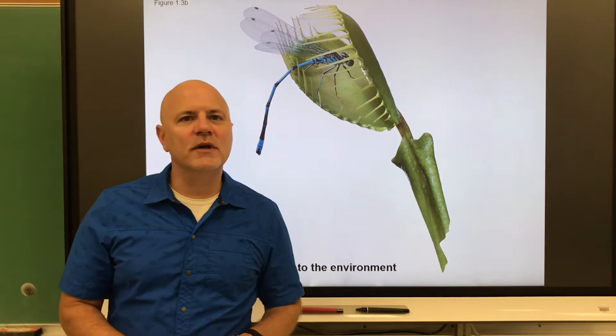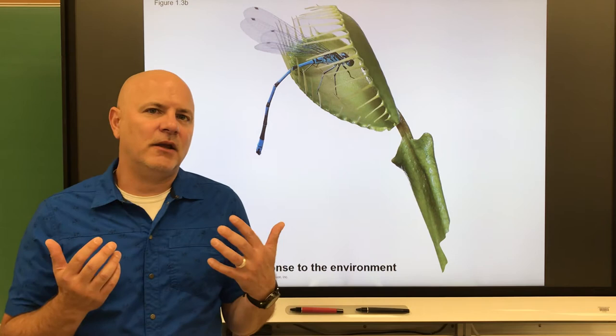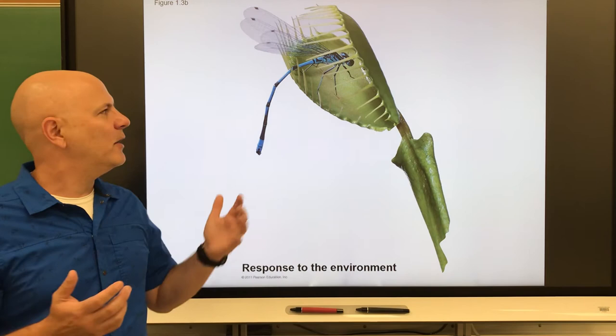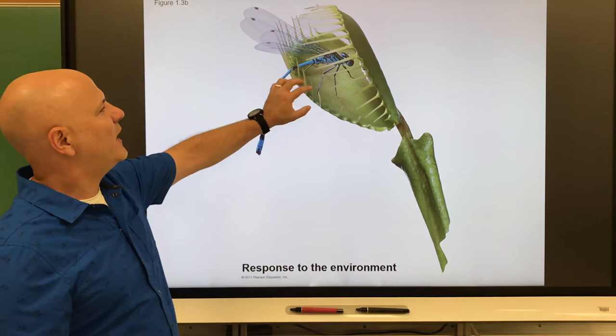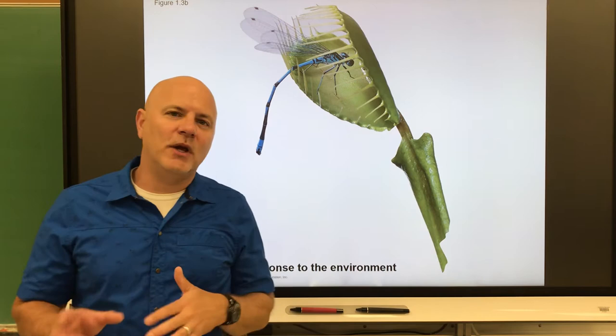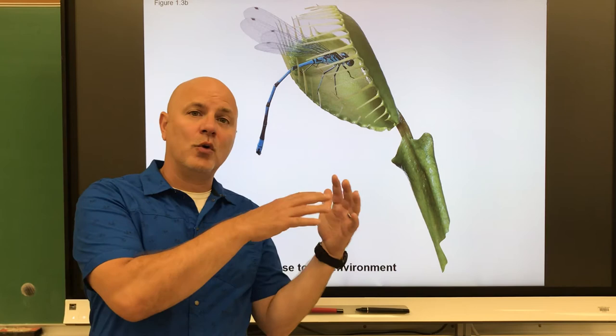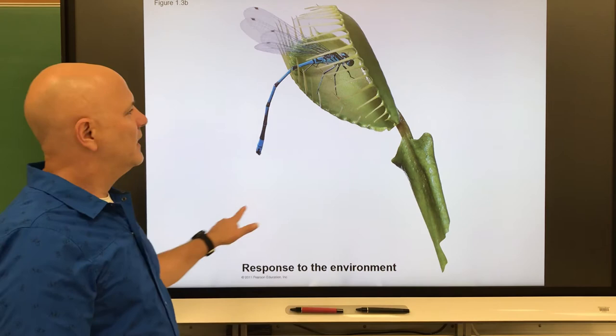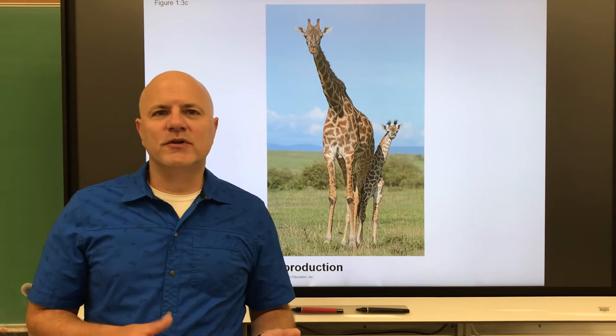Next is that all organisms respond to environmental stimuli. Some responses are very obvious — like if somebody pokes you, you jerk away. Plants also respond: this Venus flytrap responds very quickly by trapping this damselfly. Most plants respond more slowly — if a plant is away from light, you'll see it grow towards the light, and that's a response to an environmental stimulus.